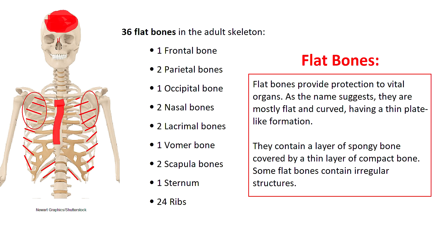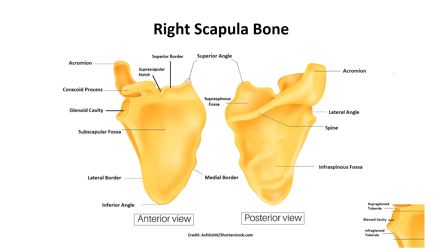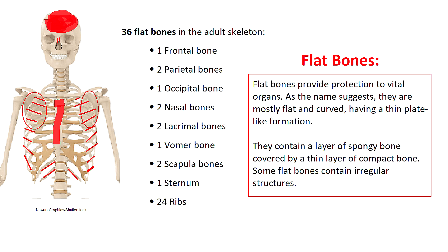Next we have flat bones, which provide protection to vital organs. As the name suggests, they are mostly flat and curved with a thin plate-like formation, and they contain a layer of spongy bone covered by a thin layer of compact bone. Some flat bones can look a little irregular — for example, the scapula is technically a flat bone but contains a spine, acromion, and coracoid process that make it look somewhat irregular. There are 36 flat bones in the adult skeleton, including some skull bones, the sternum, and the ribs.